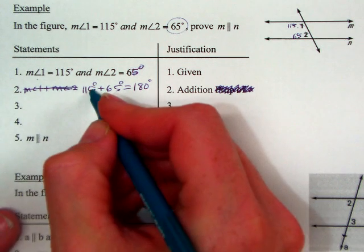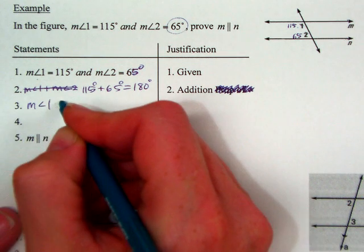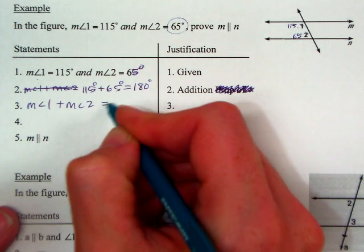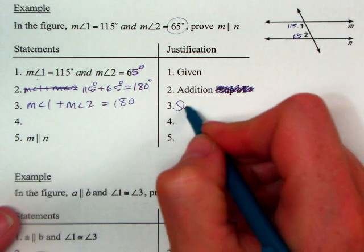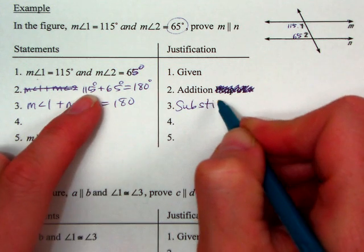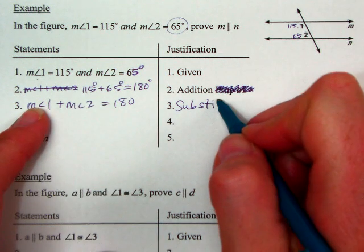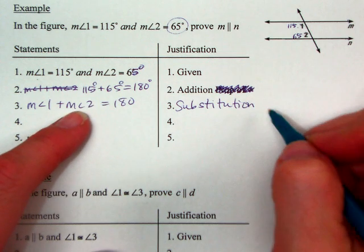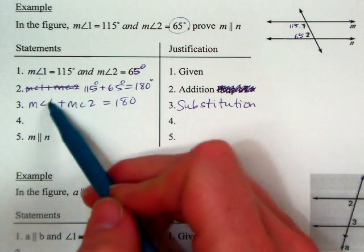Now I'm going to say angle 1 and angle 2. So angle 1 plus angle 2 is 180. This is substitution. I took out the 115 and I put in angle 1. I took out the 65 and I put in angle 2. So I kind of substituted for them.